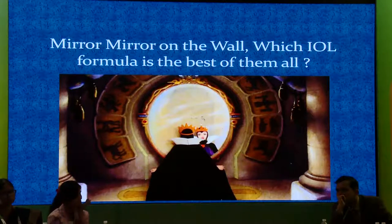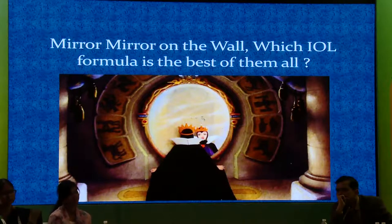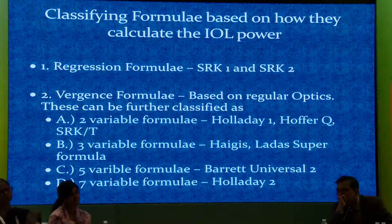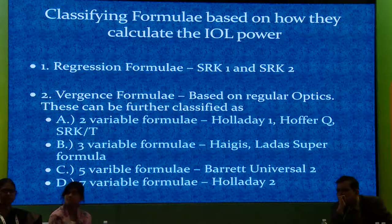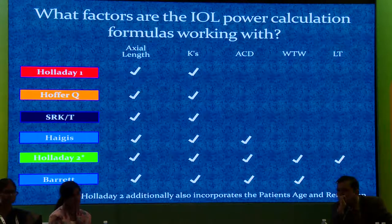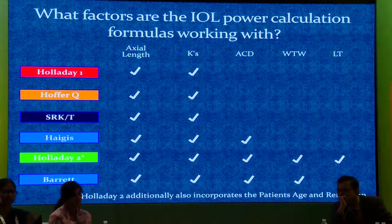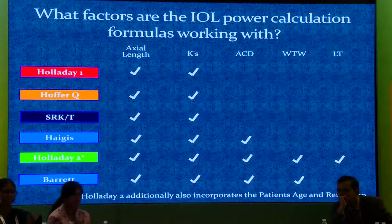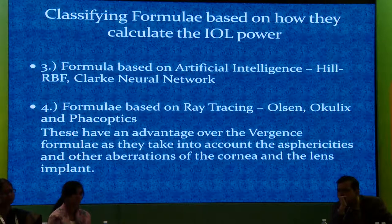Which IOL formula is the best? We had the old regression formulas — SRK1 and SRK2 — then the vergence formulas with two, three, five, and several variables. The bottom line is: the more variables you feed into the formula, the better your accuracy. The Holladay 2 and the Barrett take into consideration axial length, keratometry, anterior chamber depth, white-to-white, and lens thickness. With more variables entered, there is a good chance your results will be very, very good.